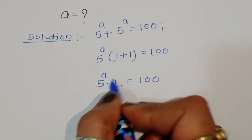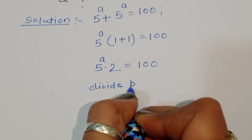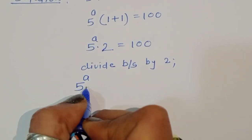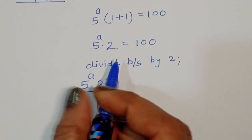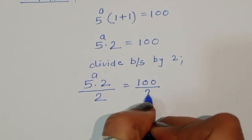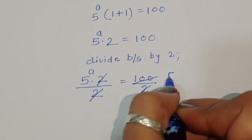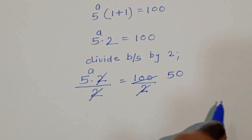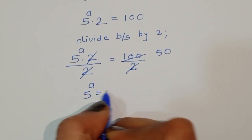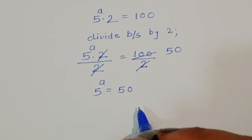Now 5 power a times 2 is equal to 100. We cancel the 2 by dividing both sides by 2, so 5 power a times 2 divided by 2 equals 100 divided by 2. The 2 cancels, giving us 5 power a is equal to 50.